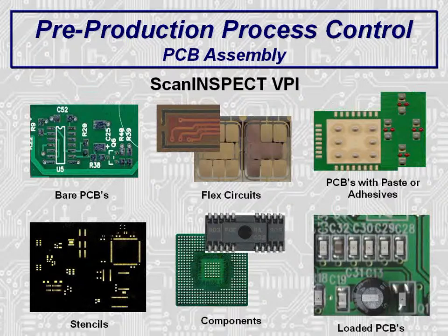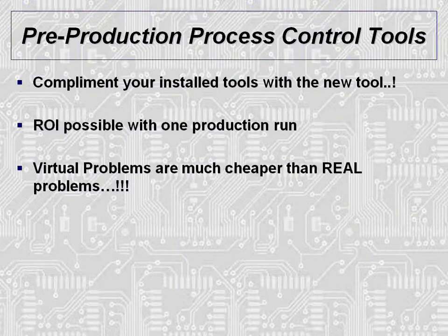These are just a few of the many types of inspection that can be done with the VPI system. The VPI system can complement your existing measurement system such as high-end metrology equipment — measure a few representative features with the highly accurate metrology system and then inspect 100% of the features with the VPI system. It is possible to achieve an ROI of the VPI system with one production run. The systems are low cost enough that saving a single production error can pay for the complete system. Please remember that virtual problems are much cheaper than real problems.